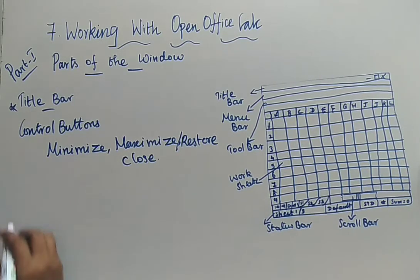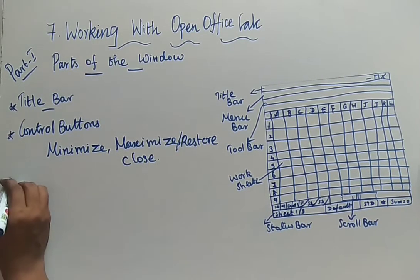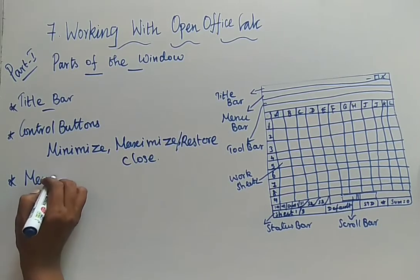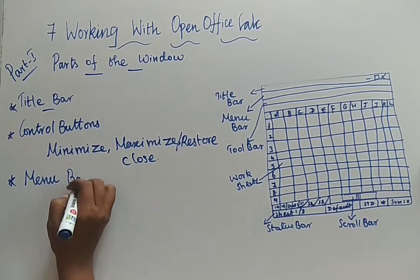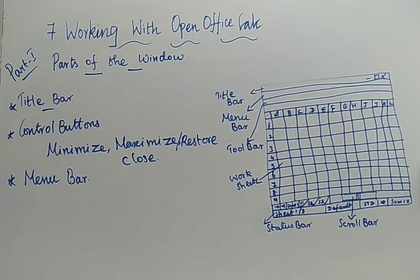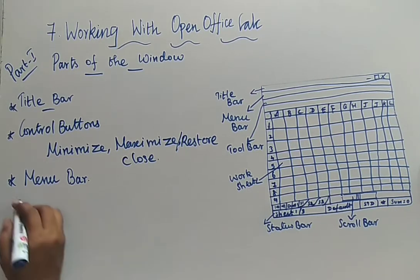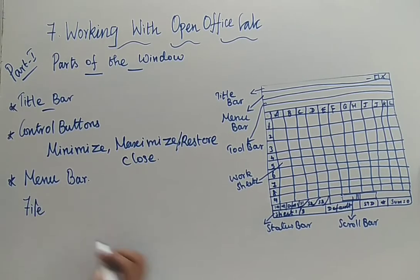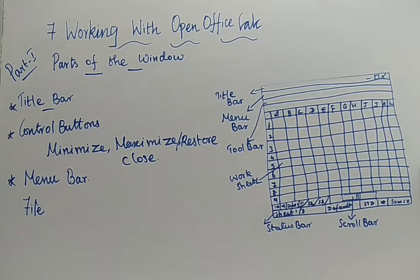Next we can have the next one — it is your menu bar. Below the title bar we are having the menu bar. Whatever menus are available are more or less similar to those of OpenOffice Writer, which we have already discussed. Under the menu bar, first you will have the first one — it is your File. Next we are going to discuss what menus are available in the menu bar.